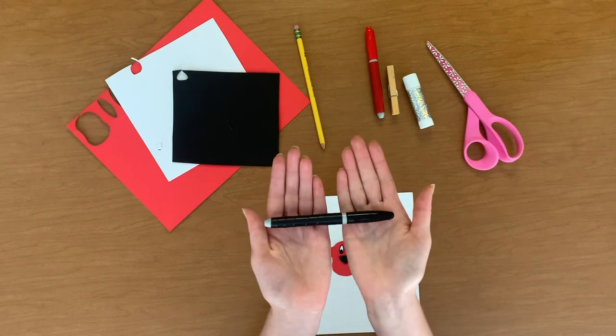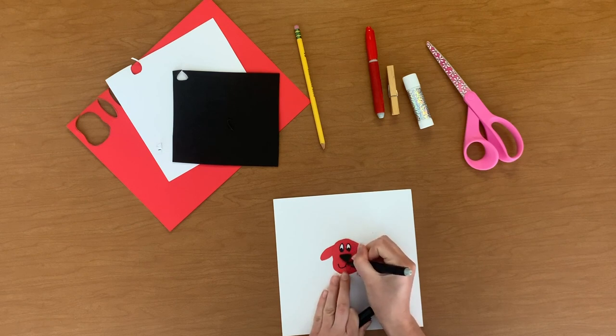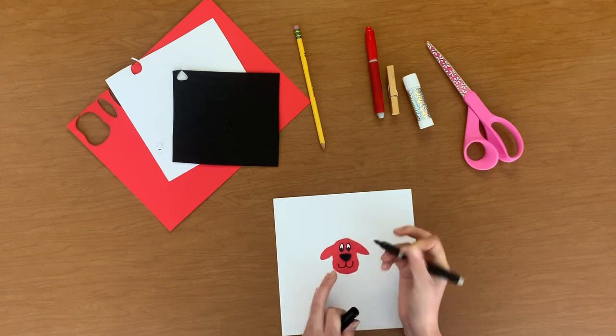Using your black marker, add a big smile to Clifford's face by drawing two semi-circles beneath the nose, making sure that they meet at the center.